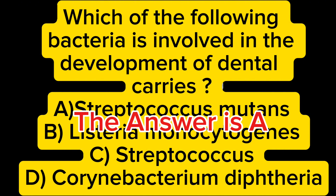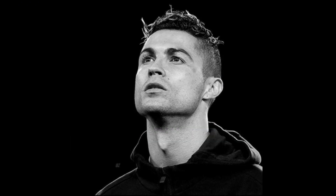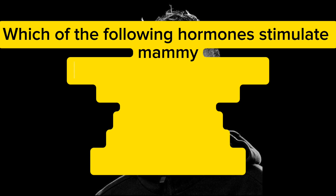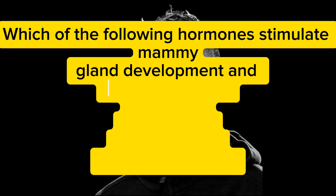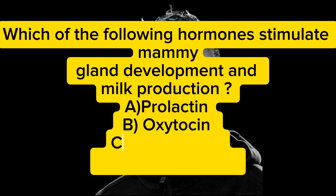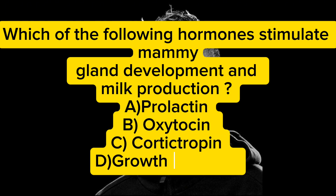Which of the following hormones stimulates mammary gland development and milk production? A) prolactin, B) oxytocin, C) corticotropin, D) growth hormone. The answer is A — prolactin.